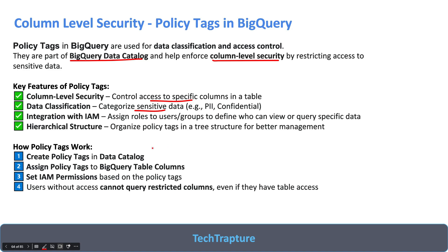To add column-level security: first, create a policy tag; then assign that policy tag to the columns; then set the IAM permissions for users who can view those specific columns; finally, restrict access so users without permission cannot query restricted columns. Note: row-level security will be covered in the next video. Now let's go to the Google Cloud Console to implement column-level security using policy tags.